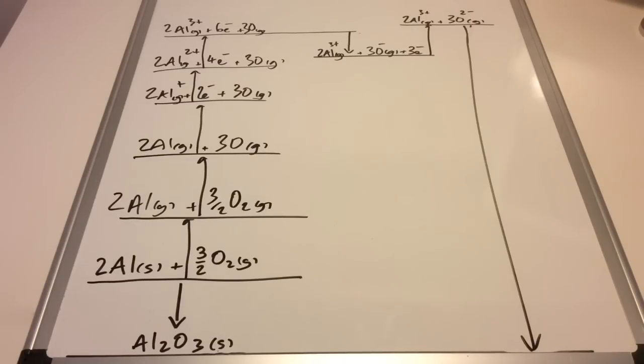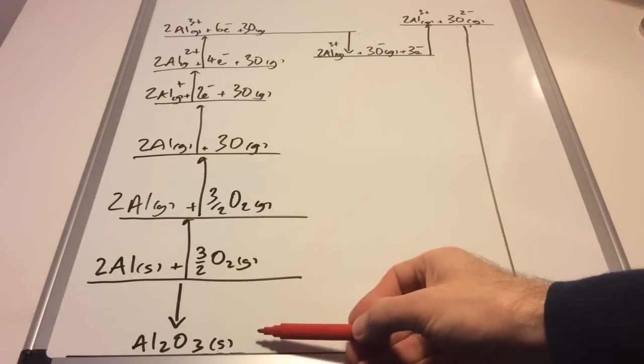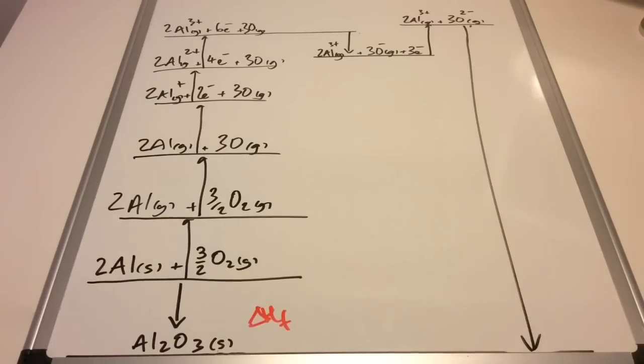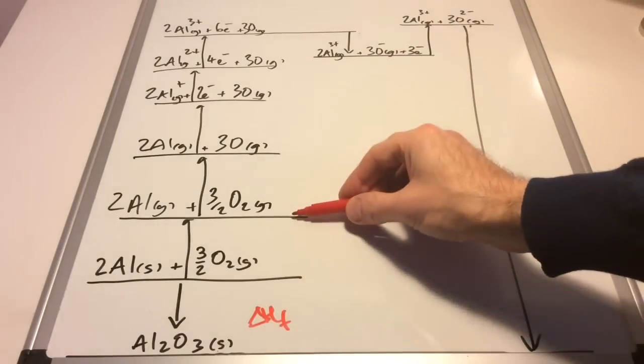Down arrows are exothermic and up arrows are endothermic. We'll start with this one here, which is the enthalpy change of formation for aluminium oxide. Then going up, if we look at what's changed, and remember only one process at a time.